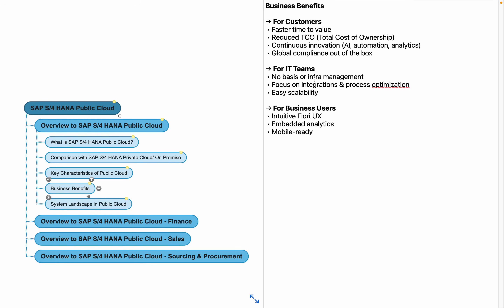From the IT team perspective, there is no basis or infrastructure management required from the customer's internal IT team — the focus is on integration and process optimization. Integration with non-SAP systems is available via BTP. Easy scalability is also available: if you start with 50 licenses today, you can easily purchase more as your company grows.